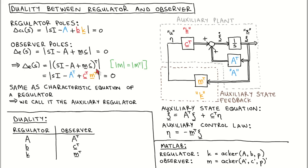However, we can write them in the same form by using the fact that the determinant of a matrix is equal to the determinant of its transpose. The observer characteristic polynomial becomes the determinant of SI minus A transpose plus C transpose times M transposed. After applying the transpose to each term, we get the determinant of SI minus A transpose plus C transpose times M transposed. Comparing with the regulator characteristic polynomial, we see that the first term is the same, the second term is a square system matrix, and the third term is a column system vector times a row gain vector.